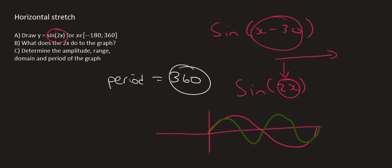Here's a little rule you can remember. The period is always going to be equal to 360 for a sin and cos graph, divided by whatever number is in front of the x. In this case it's a 2, so our new period is going to be 180.